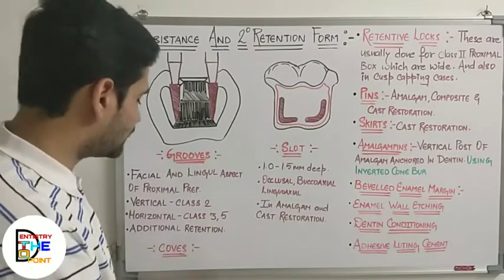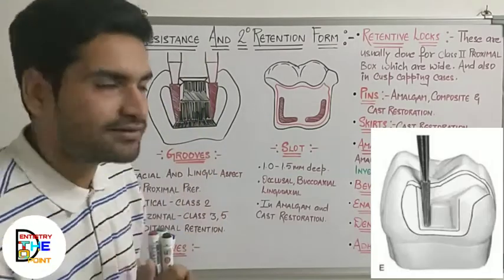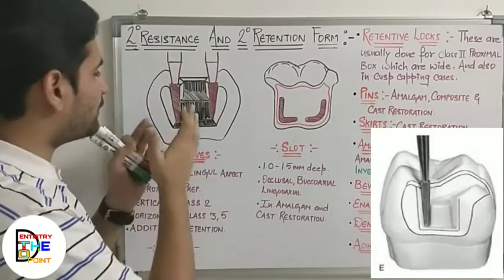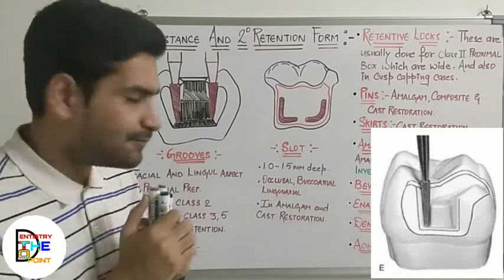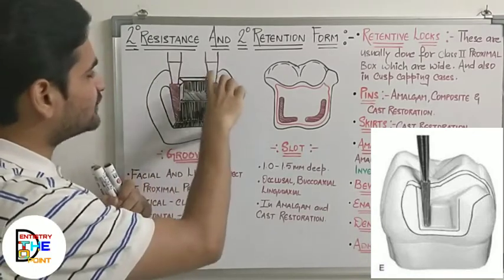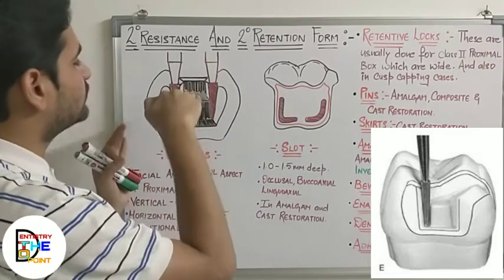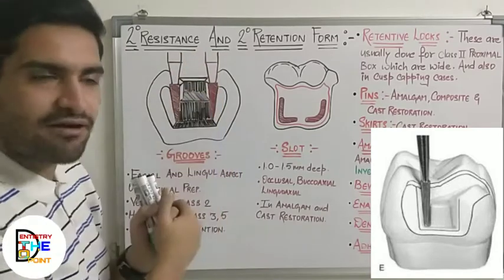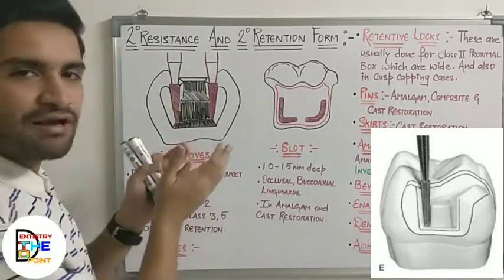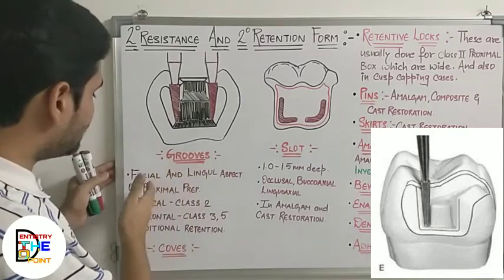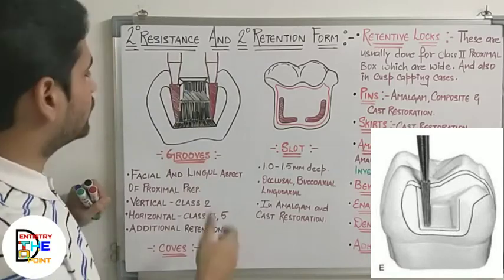Starting with grooves — grooves are vertical indentations made on the proximal surface, facially or lingually, on the axial-facial and axial-lingual walls. In the proximal view of the cavity, you make a vertical indentation into the dentine, 0.5 to 1mm deep, on both ends. These are your grooves, made on the facial and lingual aspects.